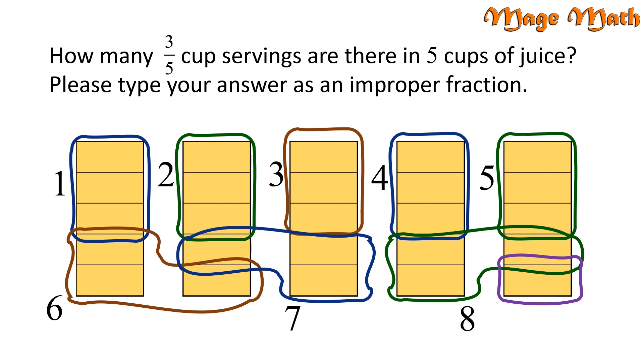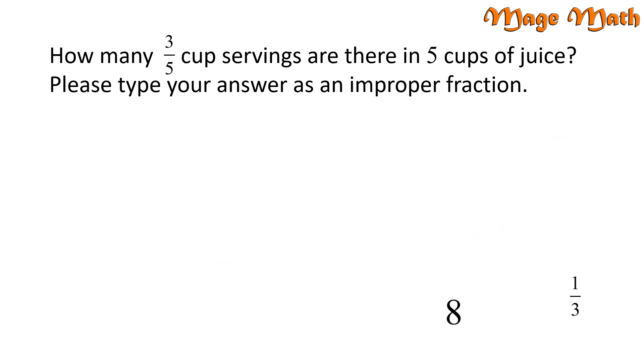Since we are looking for groups of 3, the 1 left over rectangle is 1 out of 3 or 1 third. This means that out of 5 cups of juice, there are 8 and 1 third servings of the size 3 fifths.